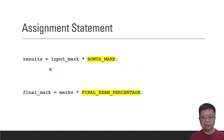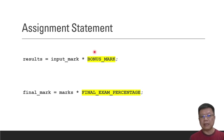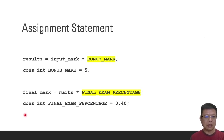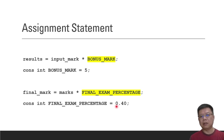Back to the example: results = input_mark * BONUS_MARK. To declare BONUS_MARK as a constant: const integer BONUS_MARKS = 5. Similarly for FINAL_EXAM_PERCENTAGE: const float FINAL_EXAM_PERCENTAGE = 0.4. Since 0.40 has a decimal point, integer is not suitable — we change the data type to float or double.